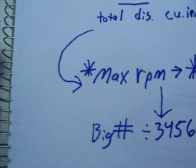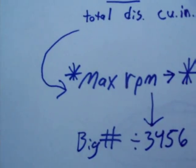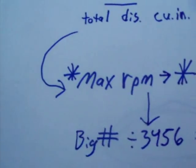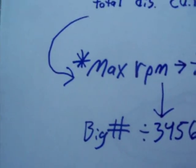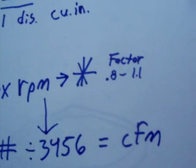Anyway, like I was saying, once you've got a certain amount of displacement, you want to multiply it by your maximum RPM. The maximum RPM, you're going to be revving your engine. Many times, that would be the red line. So you multiply it by that, and then you're going to multiply it by a factor.